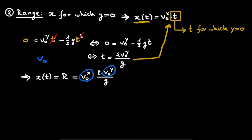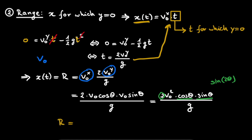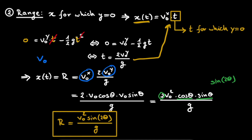Filling these in, we get that our range equals 2 multiplied by v₀ cosine theta (which is v₀_x), multiplied by v₀ sine theta (which is v₀_y), divided by g. This can be written as 2 times v₀ squared times cosine theta times sine theta, divided by g. Now we can use a trigonometric identity: 2 times cosine theta times sine theta equals sine of 2 theta. So we reduce our formula further and find the final result: the range R equals v₀ squared times sine of 2 theta, divided by g. This is our final formula to calculate the range of an object in projectile motion.